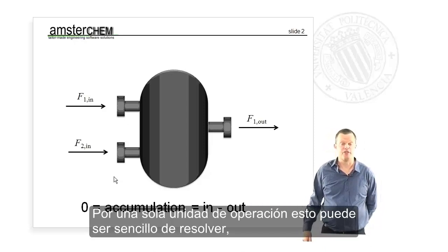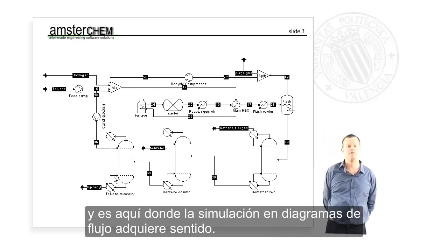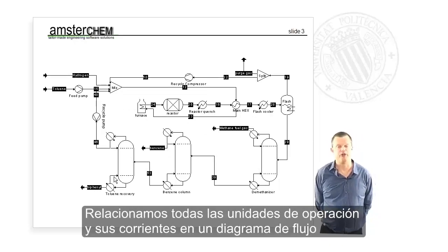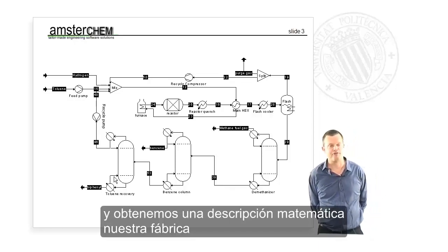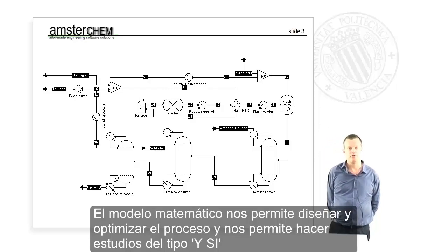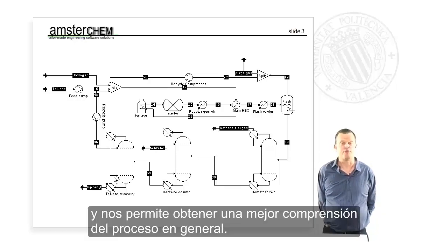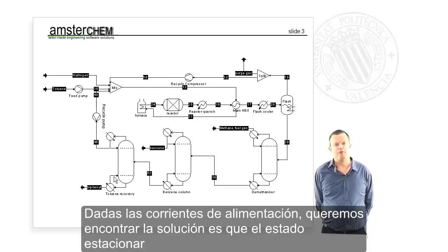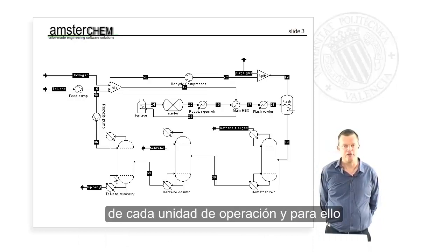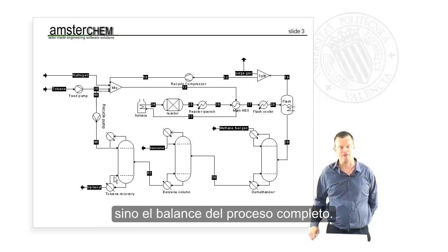For a single unit operation this might be simple to solve, but typically in a chemical process we deal with recycles, and this is where flow sheet simulation comes in. We couple all the unit operations and streams in a flow sheet, and the flow sheet gives us a mathematical description of our actual factory. The mathematical model allows us to design and optimize the process, do if-then studies, and get a better overall understanding. Given the feeds, we want to find the steady-state solution of each unit operation, which gives us the mass and energy balance of the entire factory.